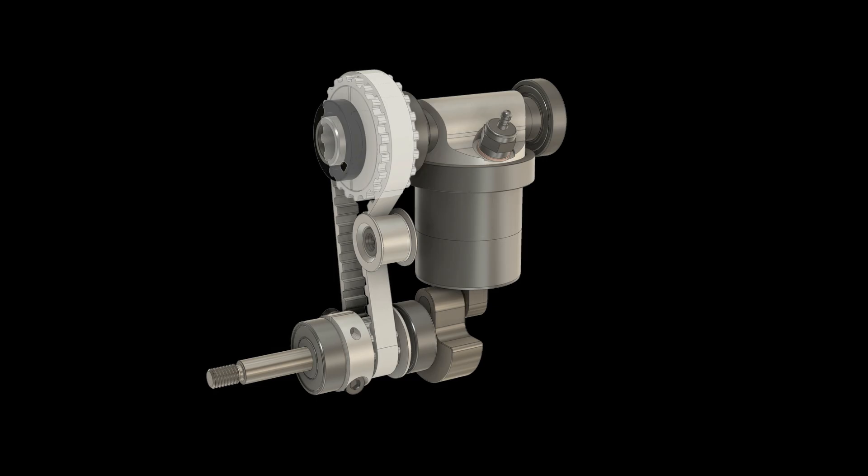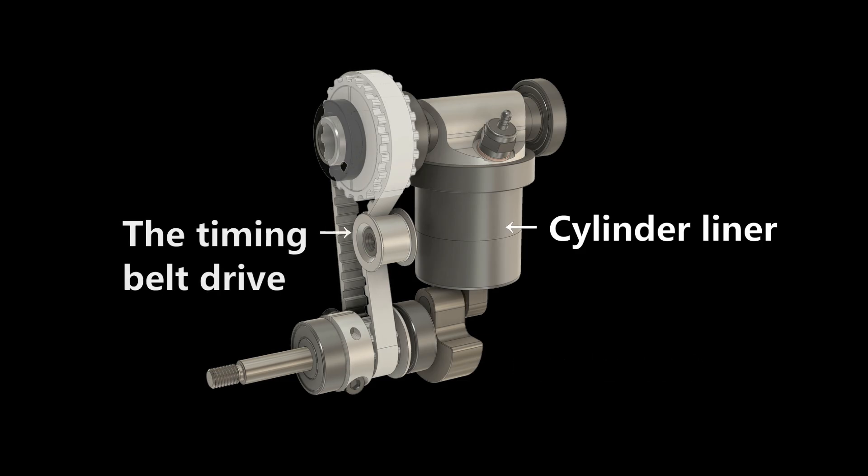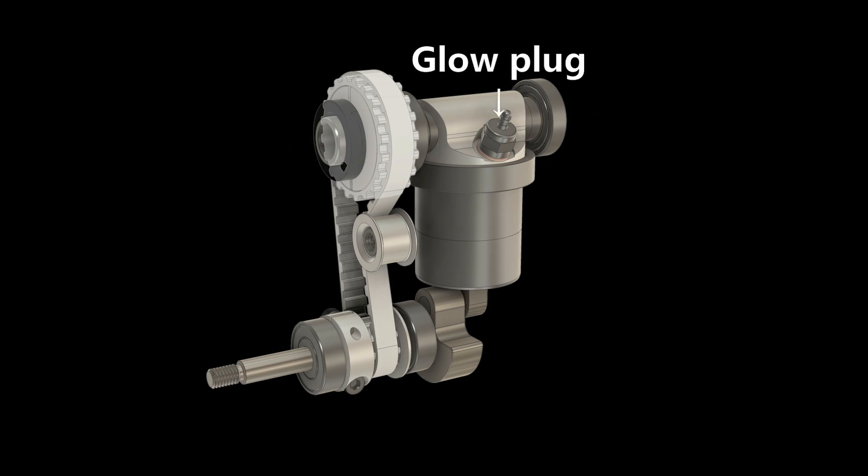Here you can see the engine reduced to its core functions: the crankshaft, the cylinder liner, the timing belt drive, the rotary valve with inlet and outlet, the glow plug. But the new feature is the cylinder head with active sealing of the rotary valve.